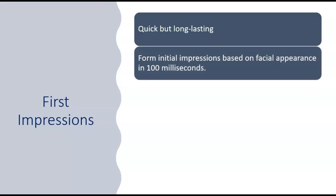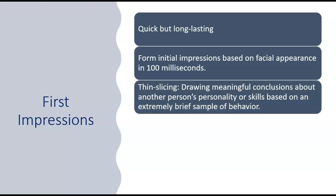Initial impressions tend to be based on, first, facial appearance. And these judgments are extraordinarily quick — in 100 milliseconds, which is a teeny tiny amount of time. This is often referred to by cognitive scientists or sensation perception researchers as thin slicing. So we are taking very tiny bits of information, and then our big cognitive system kicks in and asks what does this tiny slice of information mean. We will come to some conclusions about what a person's personality is most likely to be like, using very tiny pieces or samples of behavior or appearance in order to make those decisions.